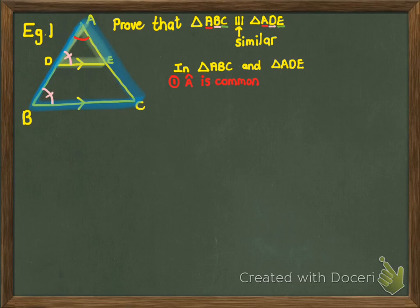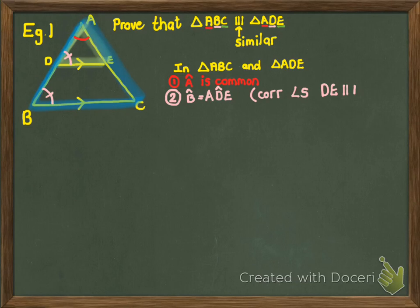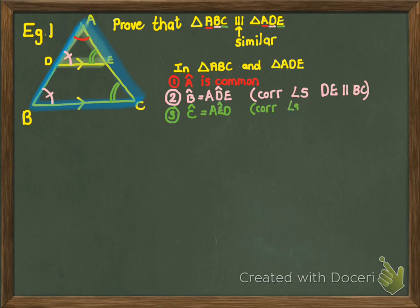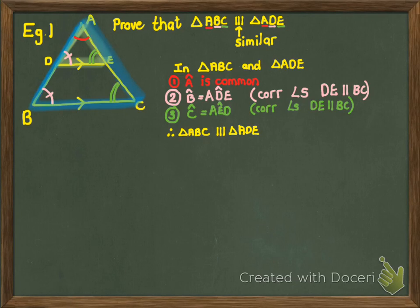Secondly, angle B and angle ADE are equal — I have to call it ADE because there are two angles at D — and the reason is corresponding angles, DE parallel to BC. In the same way, angle C is equal to angle AED, corresponding angles, DE parallel to BC. I've now shown the same three angles in each triangle, so I can make a conclusion: the two triangles are similar because of angle, angle, angle.